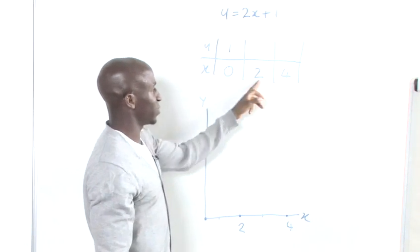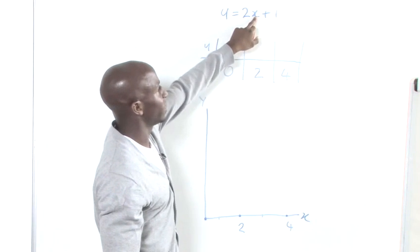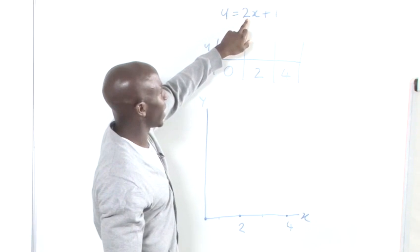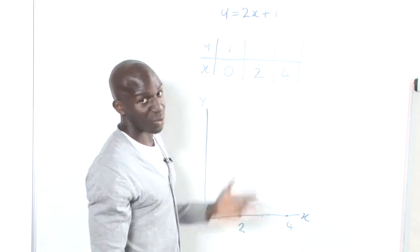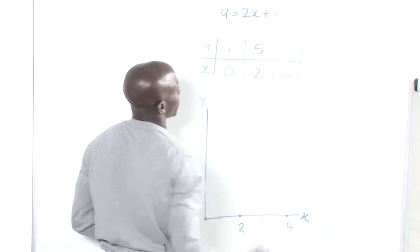Now when x equals 2, we substitute this value of x again into the place of x in our equation, and we find that 2 times 2 plus 1 equates to 5. So we place 5 here for y.